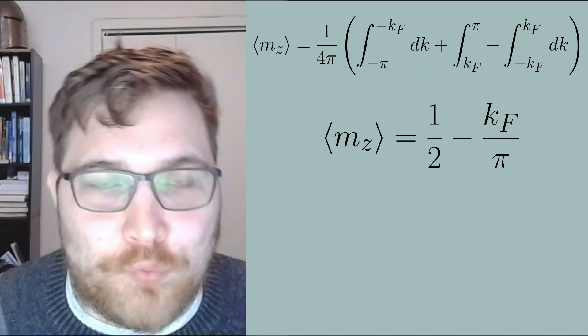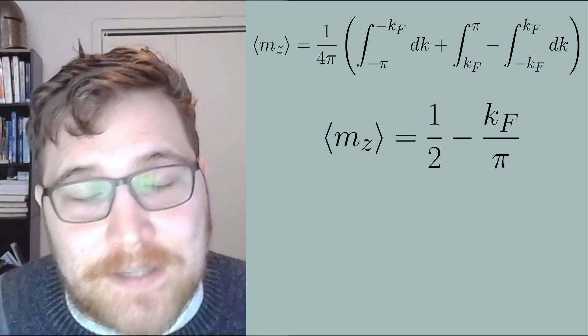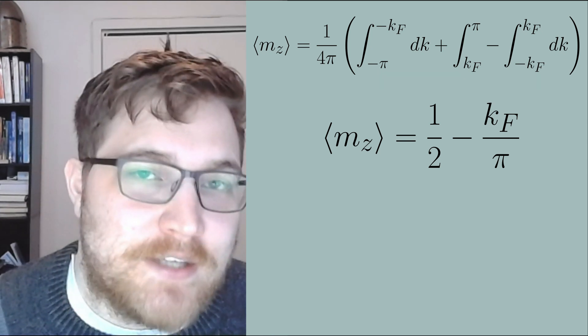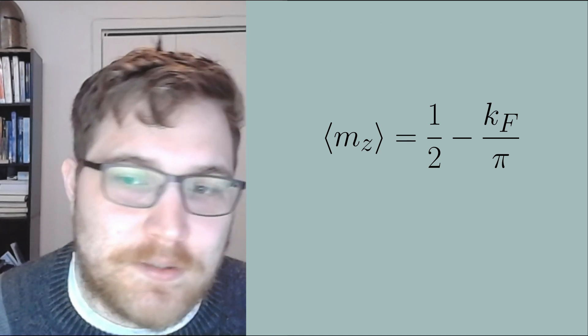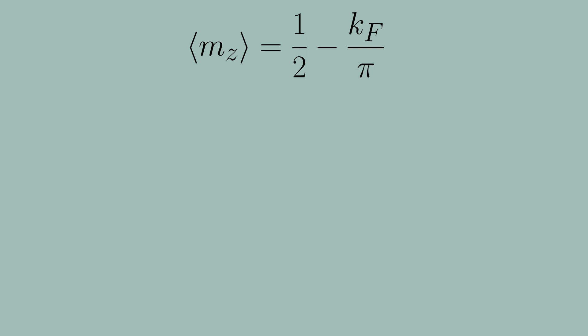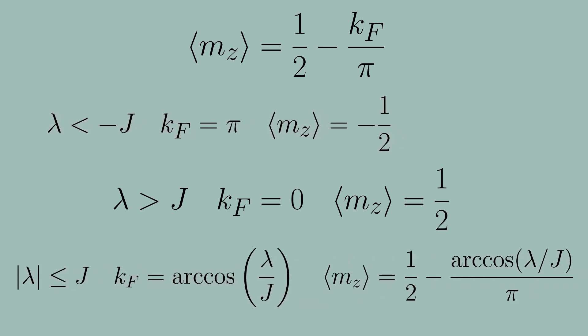This tells us something really important about our magnetization once we substitute in the definitions for the Fermi momenta. Two of our parameter regions aren't that interesting - they correspond to completely polarized states. The final parameter regime is definitely more interesting. We get the following expression for the magnetization.